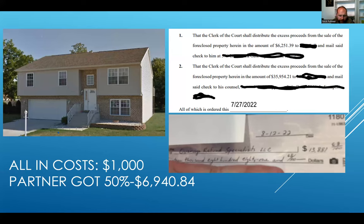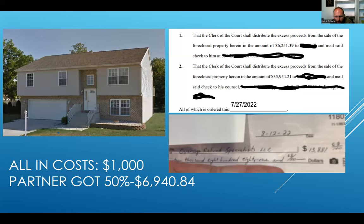Our net profit was around $13,000, and I partnered on this with someone, so my partner got half of that, which was around $6,900. Now, why are there two checks? You can see in the order that someone got distributed $6,200, and then $35,900 — that was the amount we recovered on behalf of our client. Out of that, our $13,000 was our cut. The order was signed on July 27th and the check arrived at my attorney's office around August 12th, so I received it around August 14th or 15th.